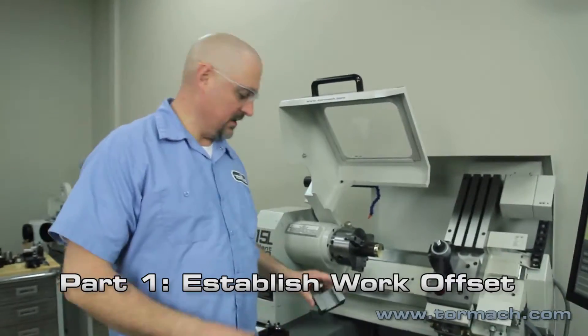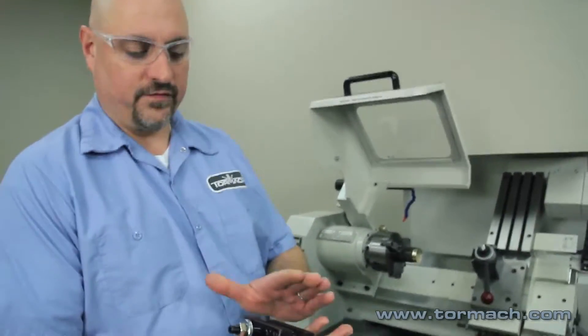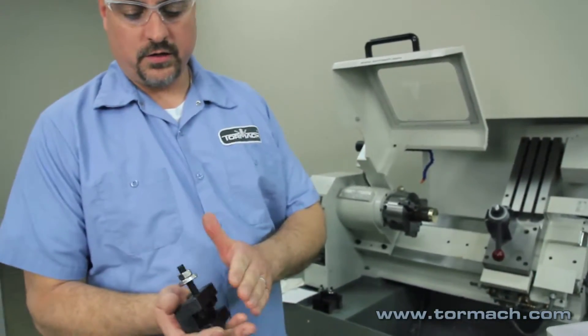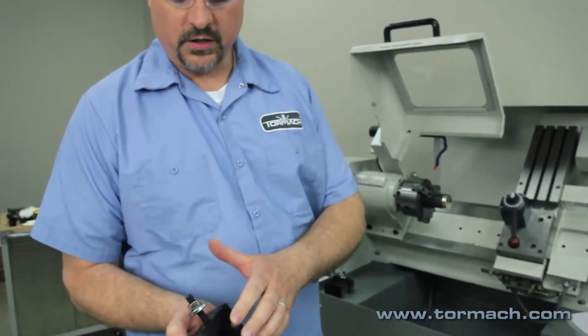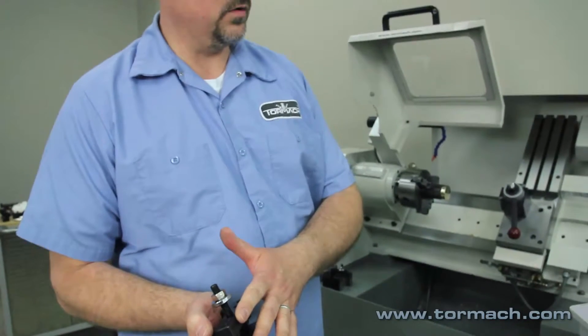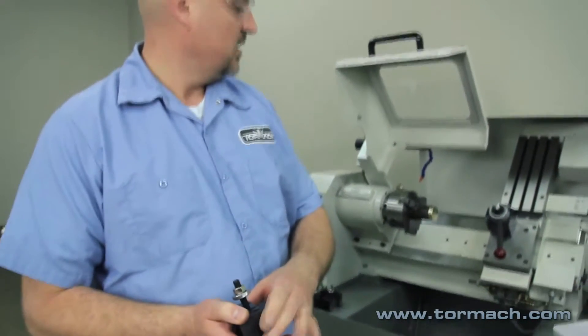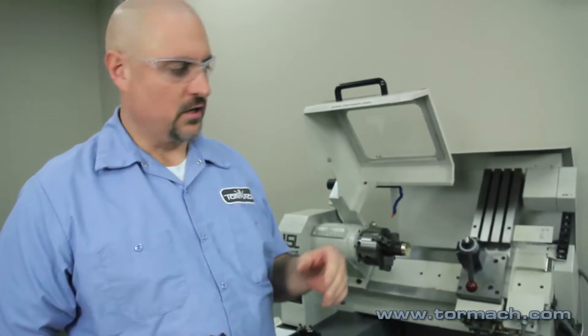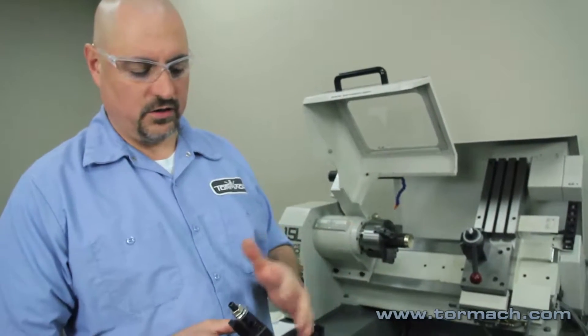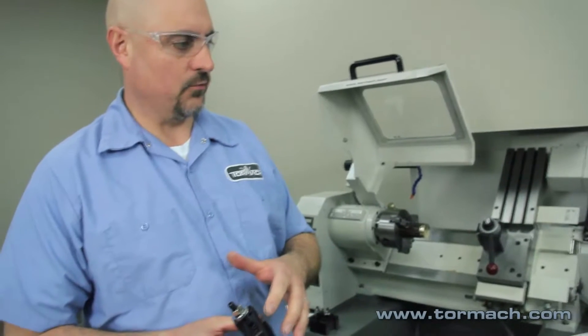To establish the work offset, we're going to touch off with an empty holder. We'll touch off on the face of the part and the face of this tool holder, and that's what we're going to use to establish our work offset. That way if whatever tool you're using, your insert breaks or whatever, you can always re-establish your work offset just using the holder. You don't have to worry about your repeatability with an insert or something like that.